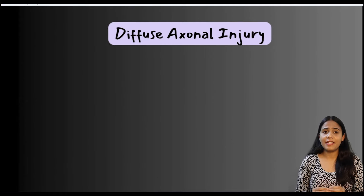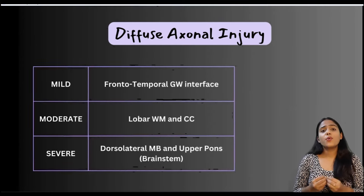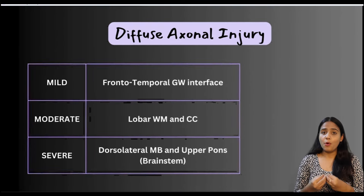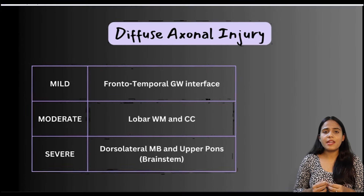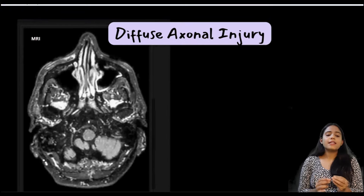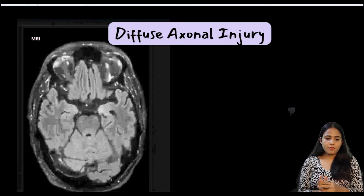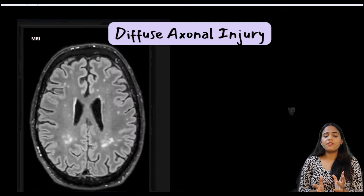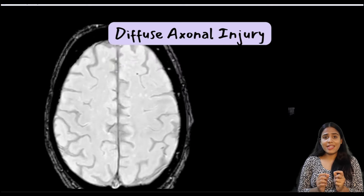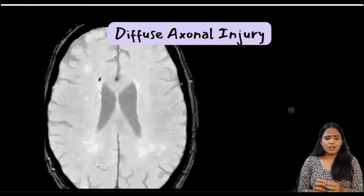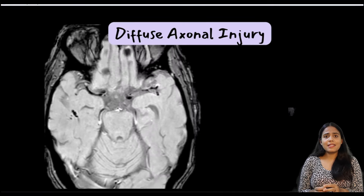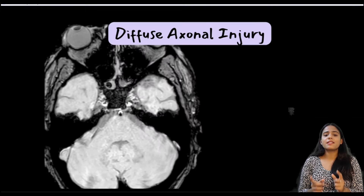Diffuse axonal injury has been graded by Adams into mild, moderate, and severe. When only the frontotemporal gray-white interface is involved, it is mild. When the lobar white matter and corpus callosum are involved, it is moderate. When the brain stem — especially the dorsolateral midbrain and upper pons — is involved, it is severe. Looking at these scroll sets from Radiopaedia: the T2 FLAIR shows multiple hyperintense foci in the bilateral frontotemporal regions, and the SWI shows hypointense lesions in the same locations as well as the thalamus and basal ganglia. Since the corpus callosum and brain stem are not involved, this is a mild or stage 1 diffuse axonal injury.